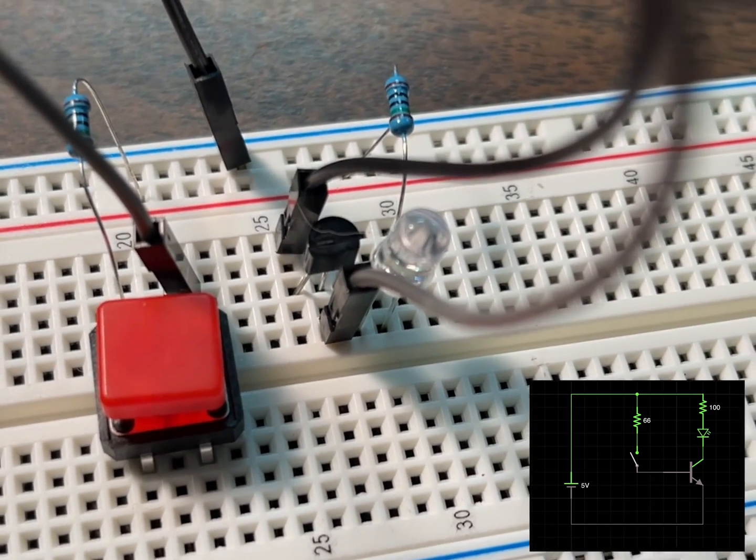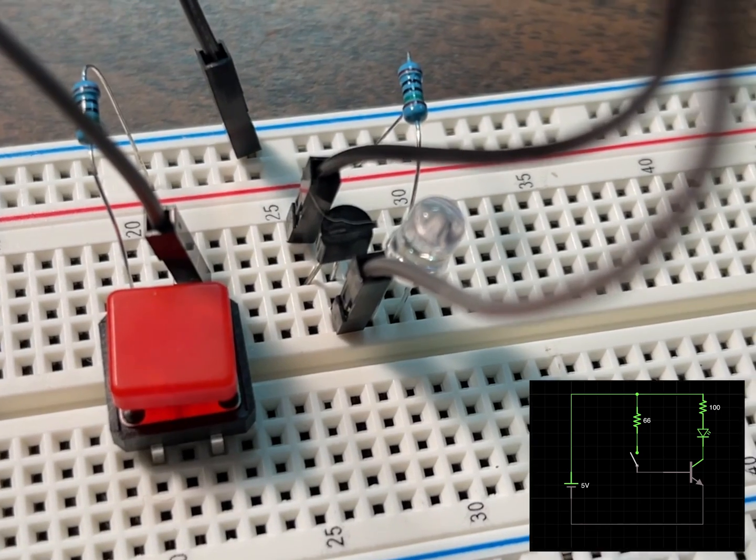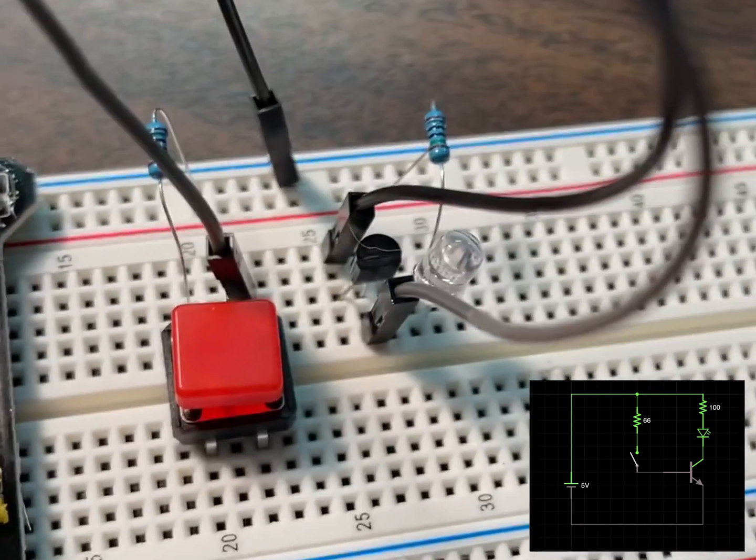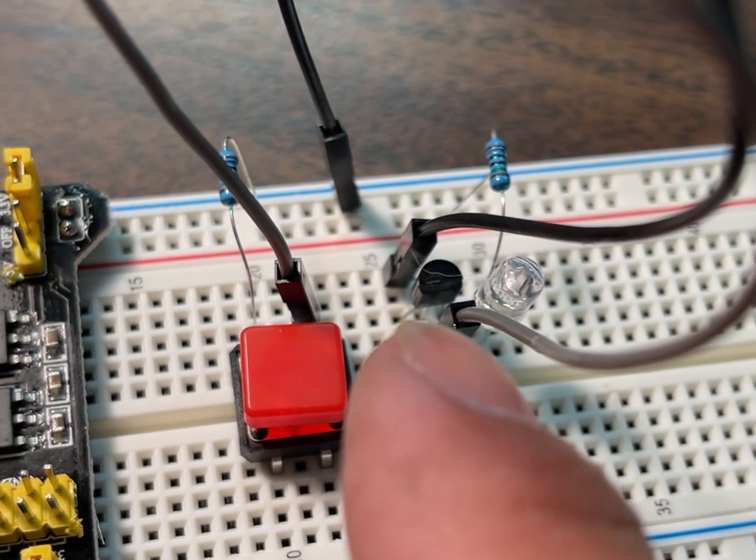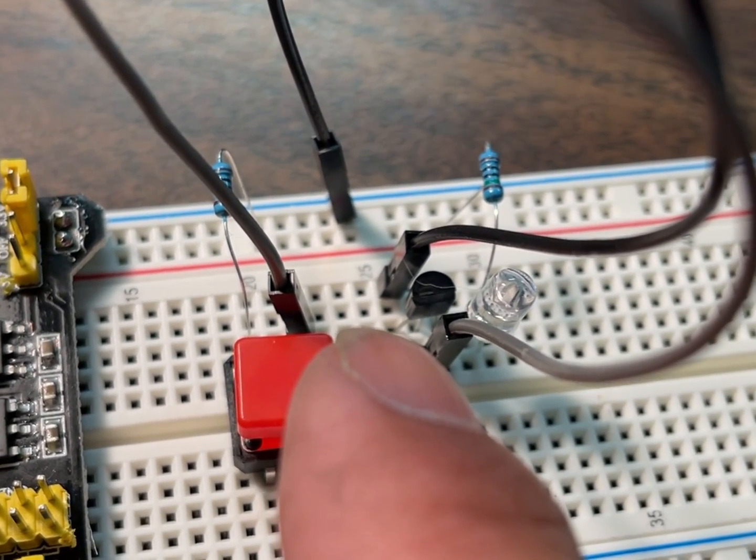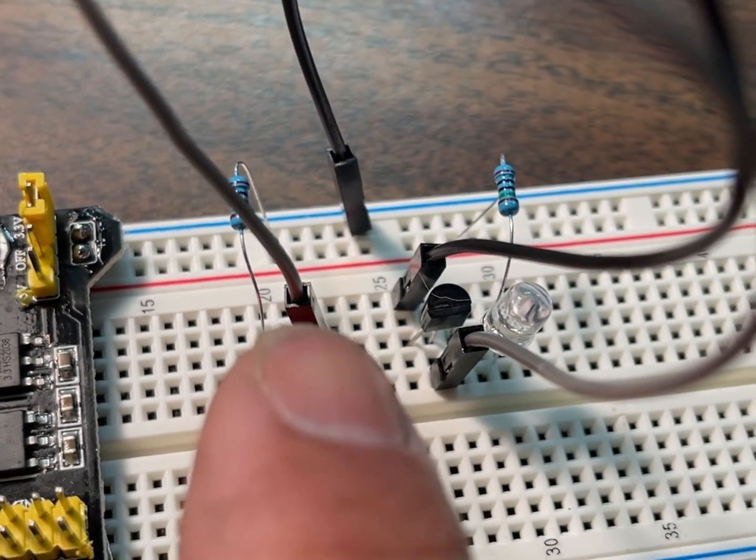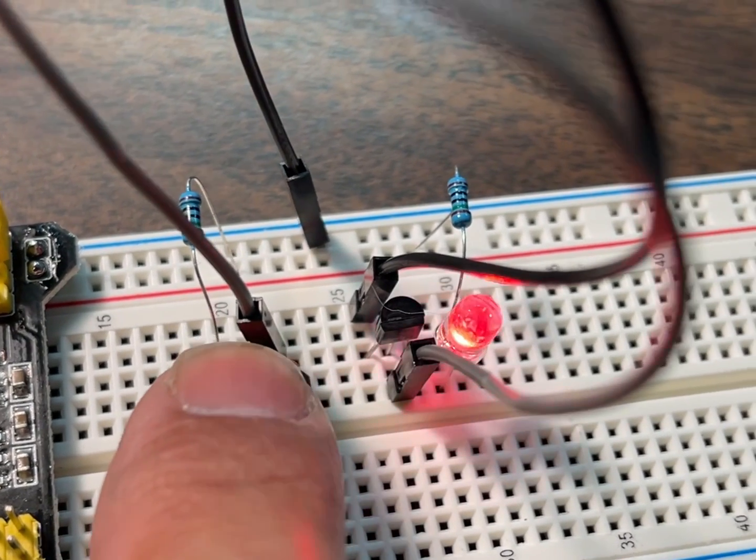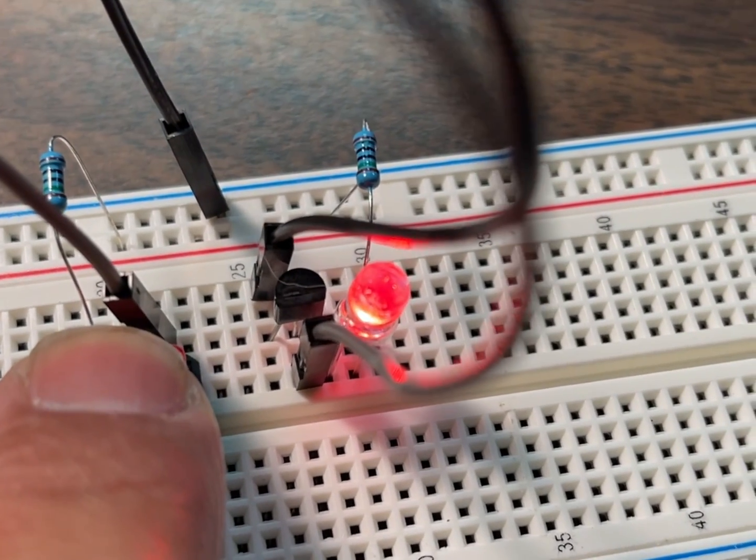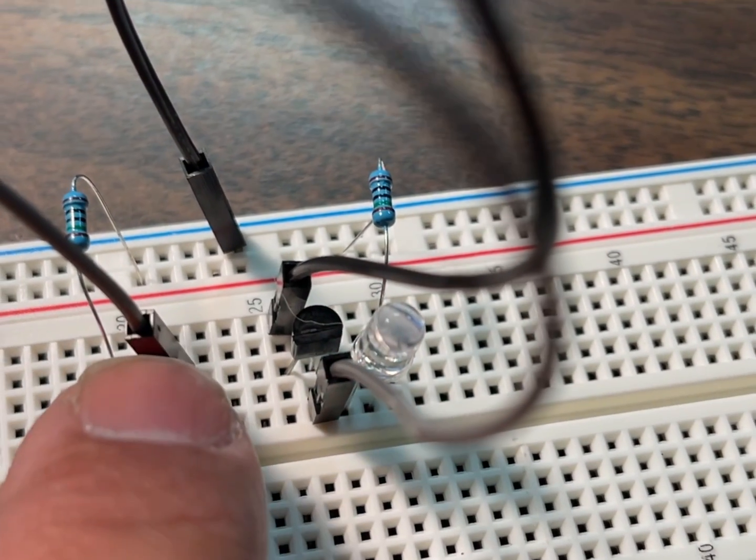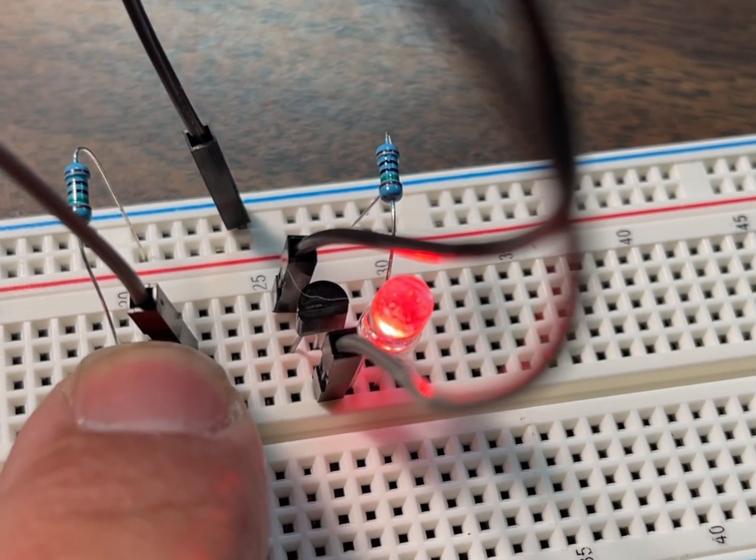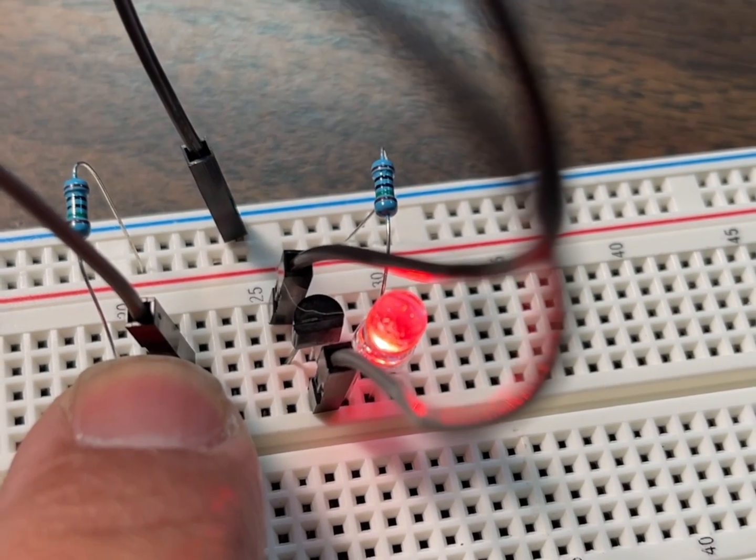The collector to the positive line is off because nothing is flowing on this side between the base and the emitter. Nothing is flowing. When I push the button, it flows and it turns on the other side. So that is how it looks on the breadboard.